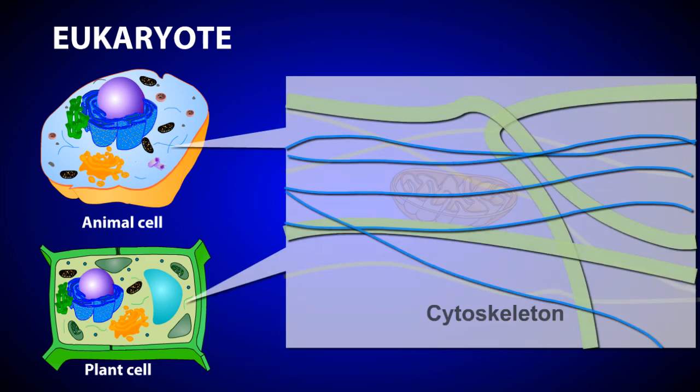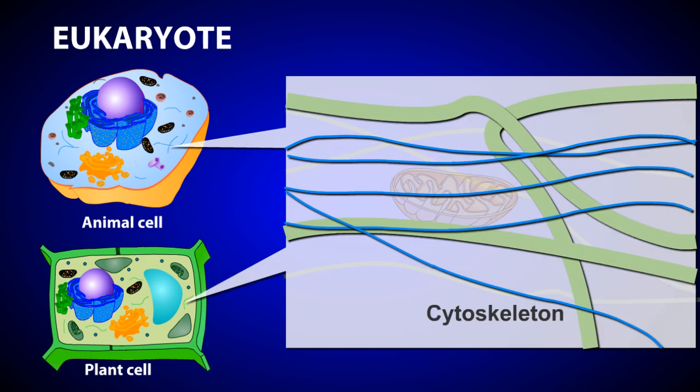The cytoplasm contains a complex network of protein fibers called the cytoskeleton. These fibers include microtubules, microfilaments, and intermediate filaments. Overall, the cytoskeleton plays a similar role to the bones and muscles in your body, providing structural support, and along with motor proteins, allowing the cell and organelles to move.